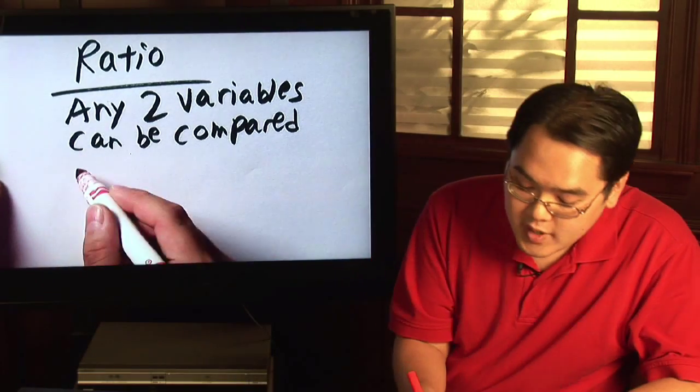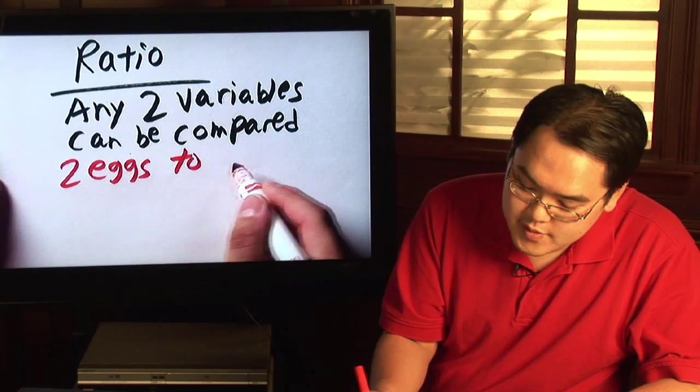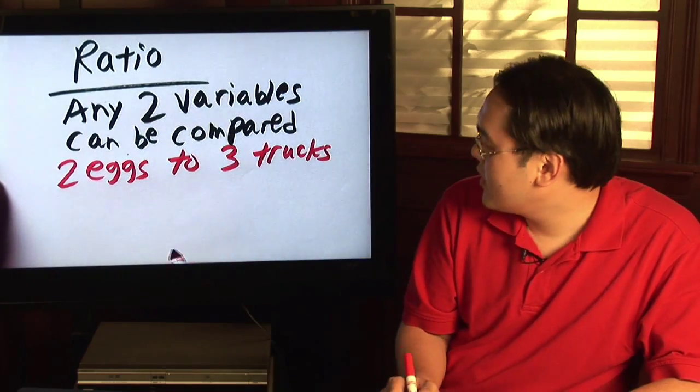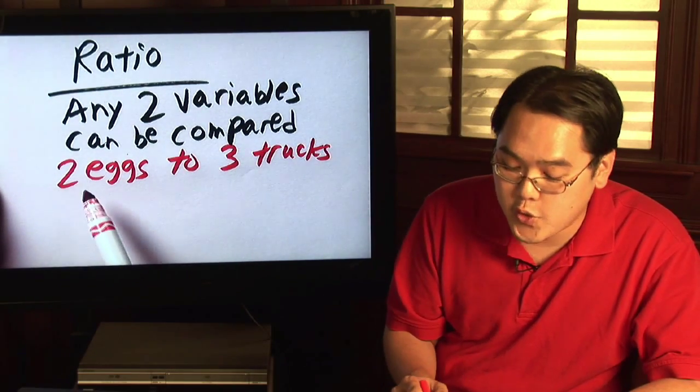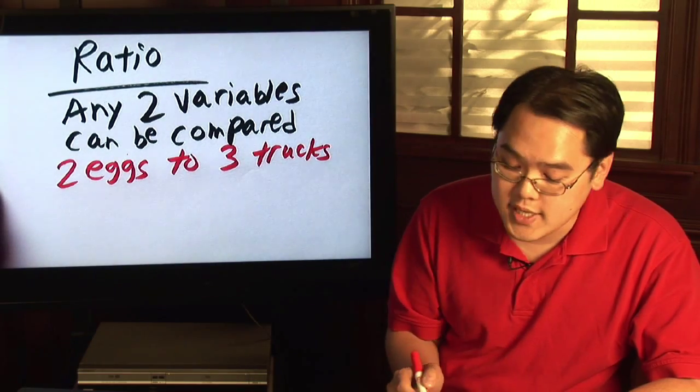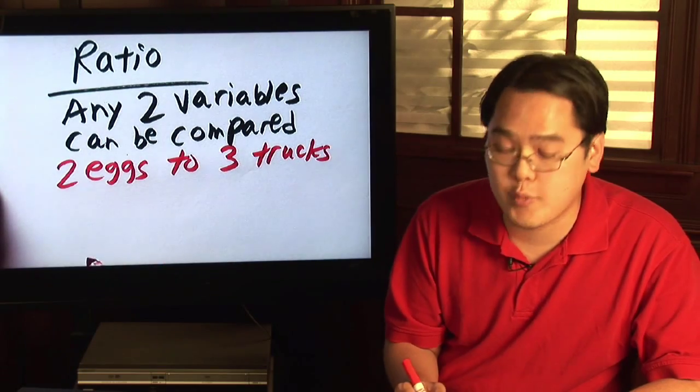So here's a little case in point. Suppose you have two eggs to three trucks. Now sounds far-fetched, but the fact of the matter is you're making a comparison. You can compare just about any things you want and then you can write a ratio from there and turn it into anything number related.